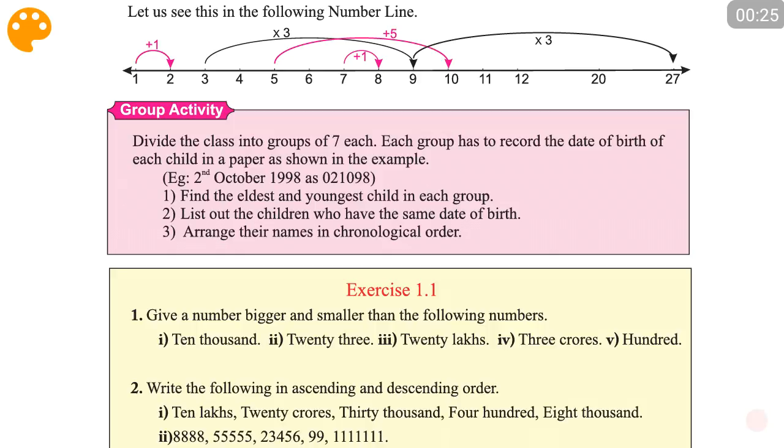Okay, let's continue. You see an example here where one student was born on 2nd October 1998. You have to write that as 02 for the date, then the month as 10, and then the year as 98.